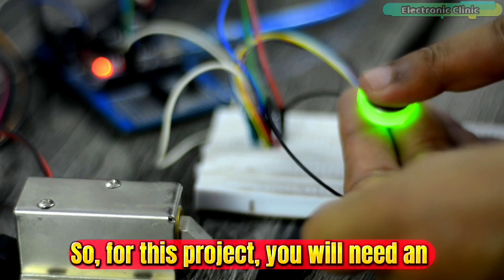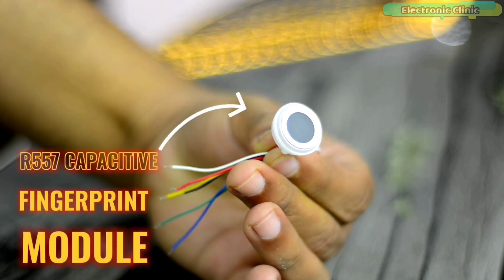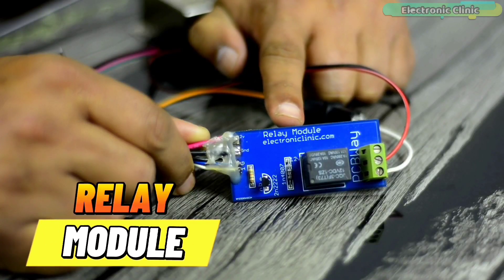For this project you will need an Arduino Uno or Arduino Nano, the R557 capacitive fingerprint module, a 12 volt electronic door lock, and a relay module.